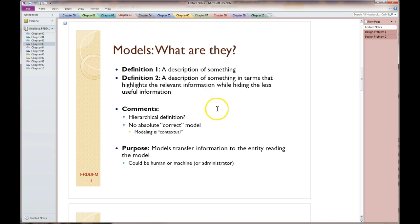When you're talking about modeling, there's no absolute one correct model for anything. Typically modeling is contextual in nature, meaning that the best model depends on the context you're working with. But in the end, the purpose of any model is to transfer information to the entity reading the model. That entity could either be a human or some type of machine like a computer or software, or even an academic administrator.